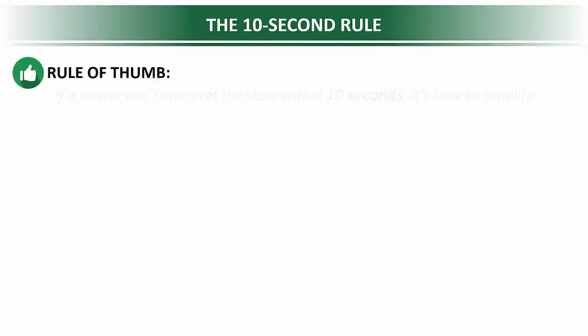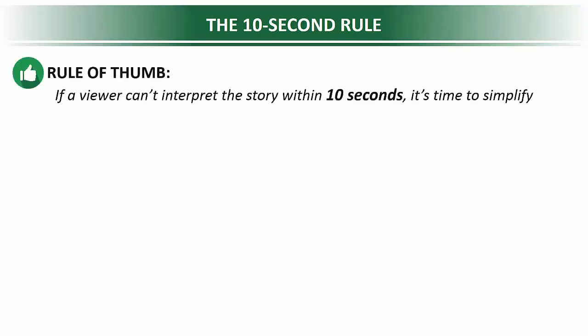So I have a rule of thumb that I call the 10-second rule, which basically means that if a viewer can't interpret the story within 10 seconds, it's time to simplify.